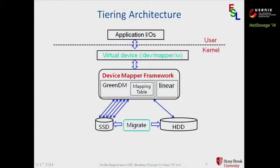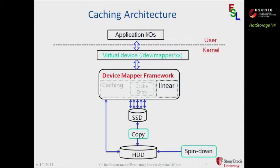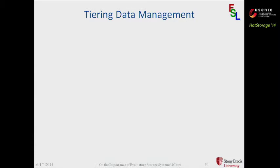We also spin down the HDD when it's idle for a certain amount of time. For the caching architecture, it's actually very similar to what we discussed earlier, except two things. One thing is that now it's a cache entry table instead of a mapping table, and it only maps from a cache device to a physical device. For tiering data management, we divide virtual block addresses into virtual extents. An extent is a chunk of data whose size is fixed once configured.